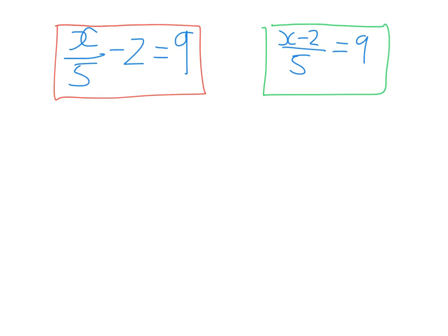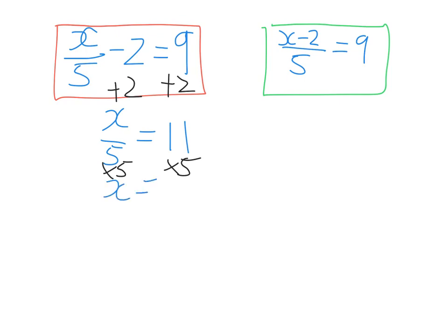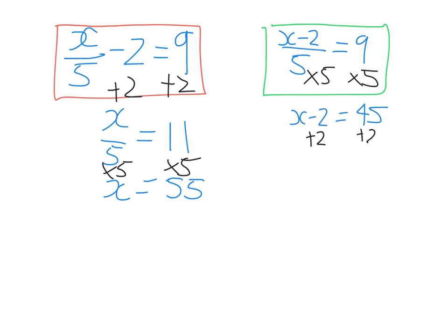For the first equation, because subtracting two is the last thing done, I add two to both sides to get x over five equals 11, then times both sides by five to get x equals 55. For the second equation, because dividing by five is the last thing done, I times each side by five first to get x minus two equals 45, then add two to both sides to get x equals 47. You can see we've got totally different answers even though the equations looked very similar — you must get the order of operations right.